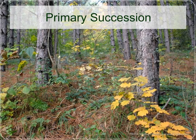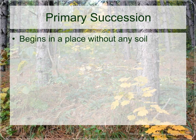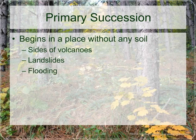There are several different ways that we can categorize the patterns of succession. One way is by making a distinction between primary and secondary succession. In primary succession, the disturbance was severe enough to actually remove the soil. These are pretty extreme situations like volcanoes, landslides, and even flooding — like we've seen in our local area around New Paltz and the Hudson Valley.